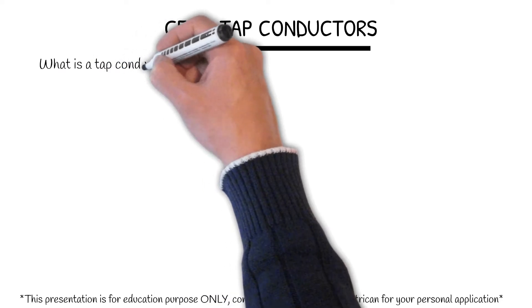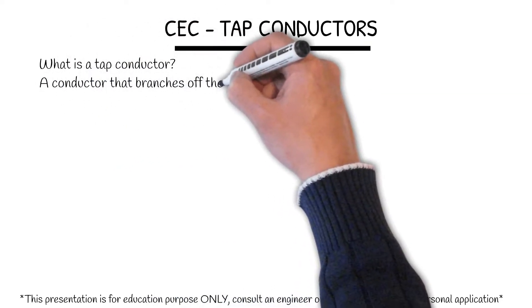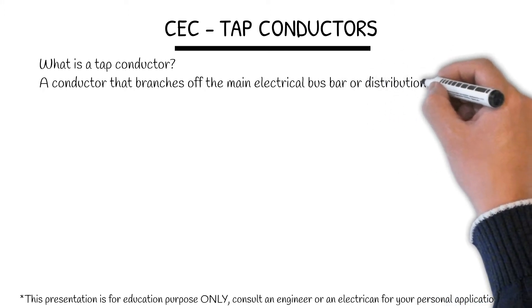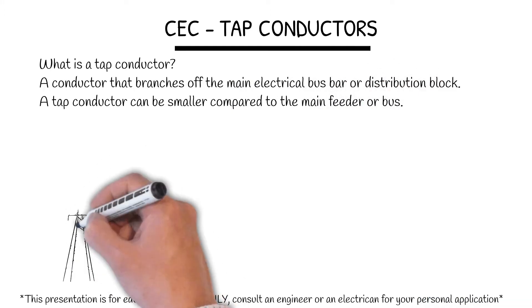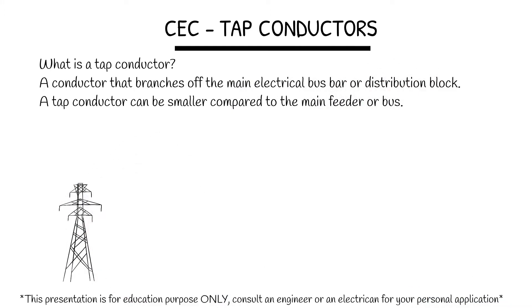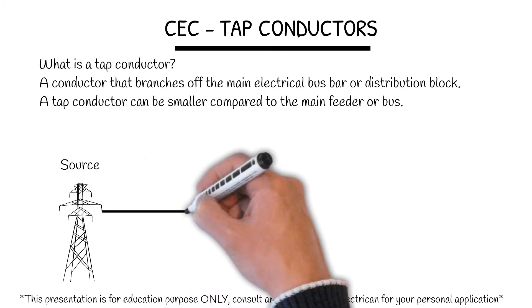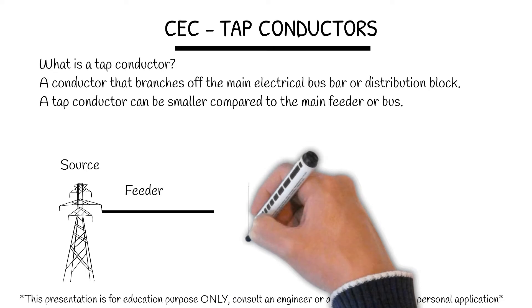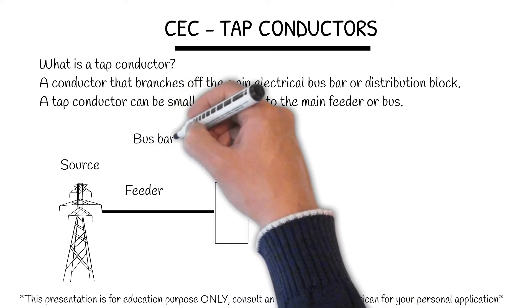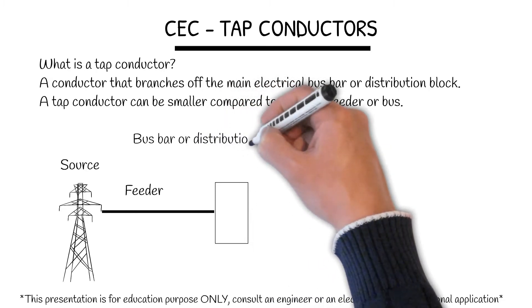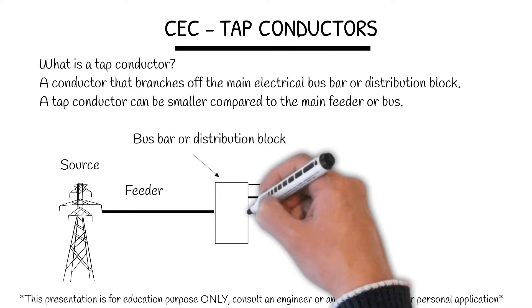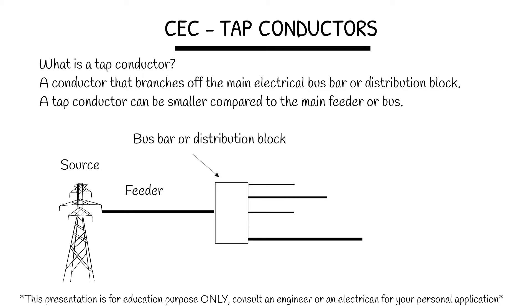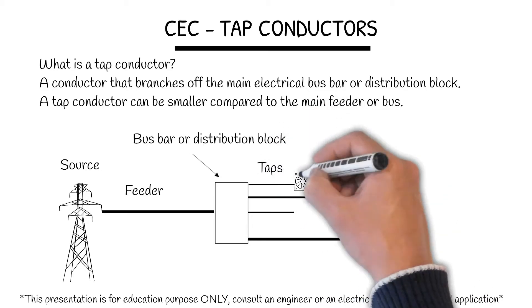CEC Tap Conductors. What is a tap conductor? A conductor that is branched off the main electrical bus bar or distribution block. The tap conductor can be smaller compared to the main feeder or bus. This is the source and this is the feeder, which feeds the bus bar or distribution block. And these are branches or tap conductors going to the individual loads.